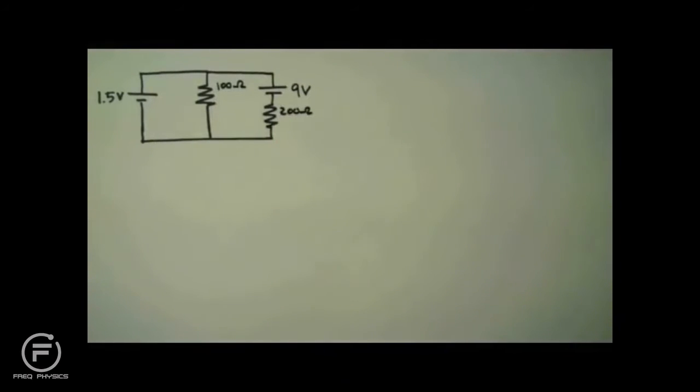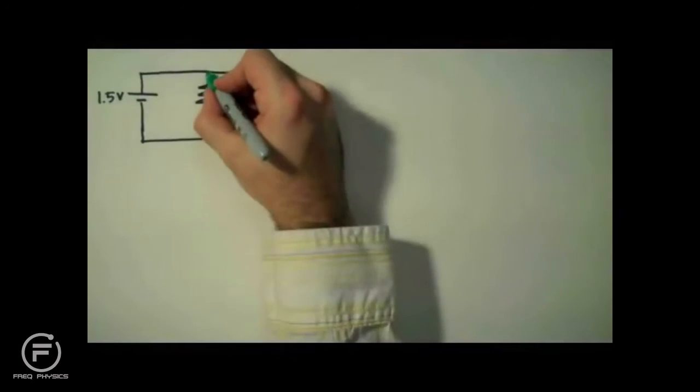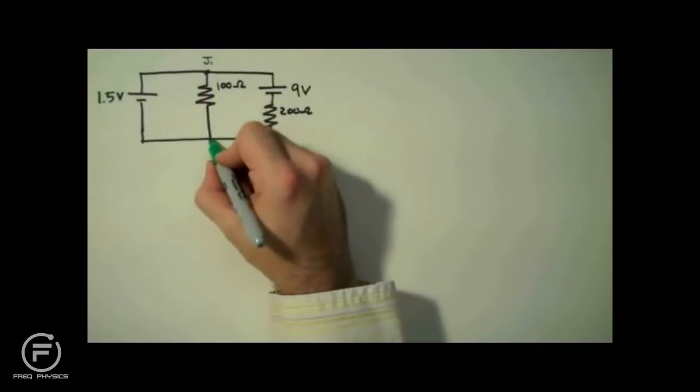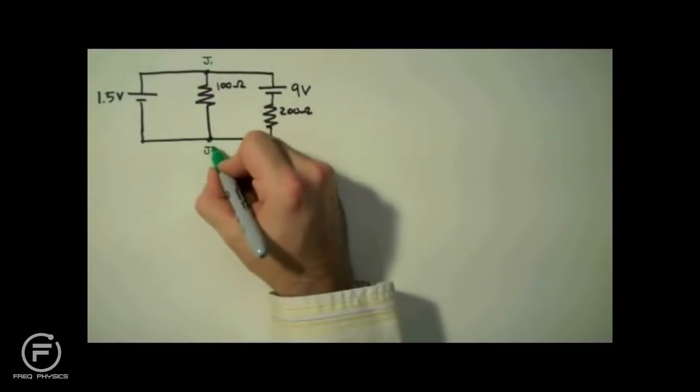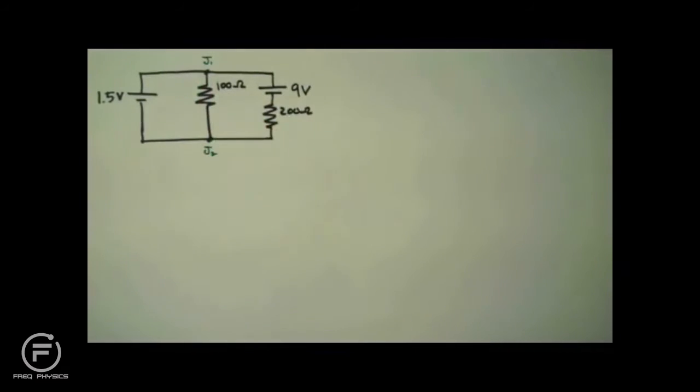As always, when using Kirchhoff's rules, we're going to start by labeling our junctions. I'm going to label mine J1 and J2.